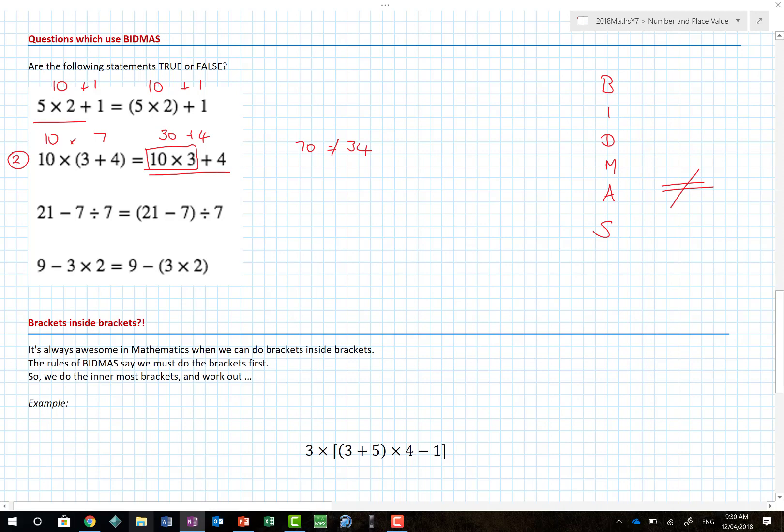Question number 3. 21 - 7 ÷ 7. Brackets on this side, nope. Indices no, division yes. So we have to do 7 ÷ 7 first, which is 1. So we have 21 - 1 which is 20. What about this one here? Brackets have to be done first. 21 - 7 is 14, which you then divide by 7 which gives us 2. Again they are not equal. And finally 9 - 3 × 2 brackets. So we have to do the multiplication first, which gives us 6. So 9 - 6 is 3. And again that's 9 - 6 which gives me 3. And so in this situation that would be true, false, false and true.